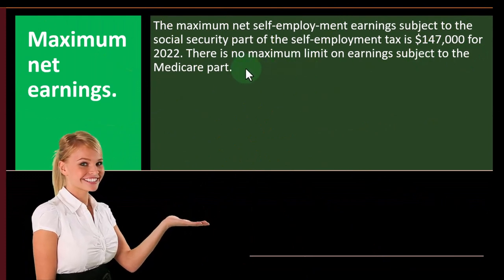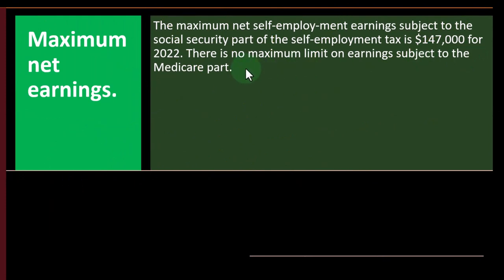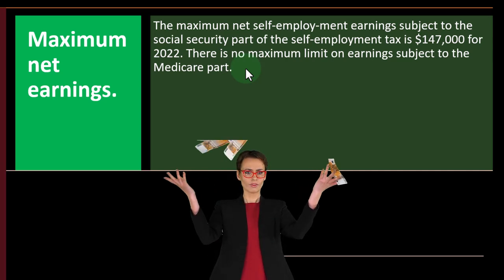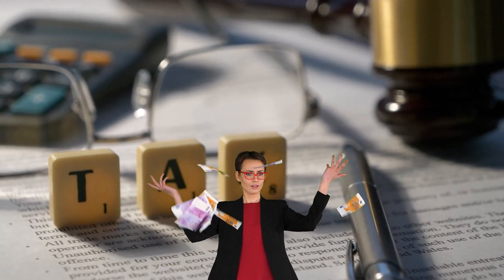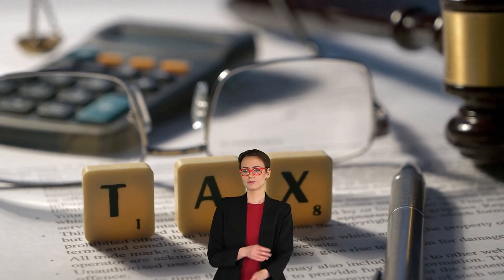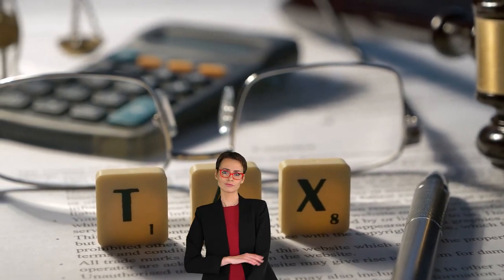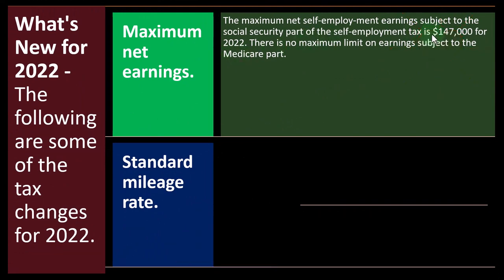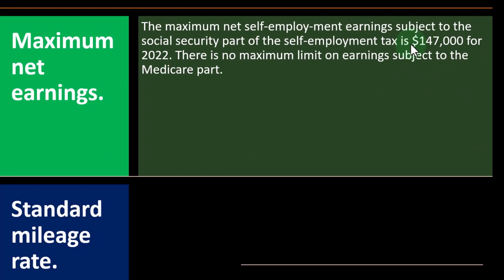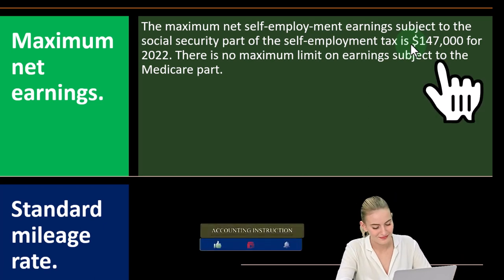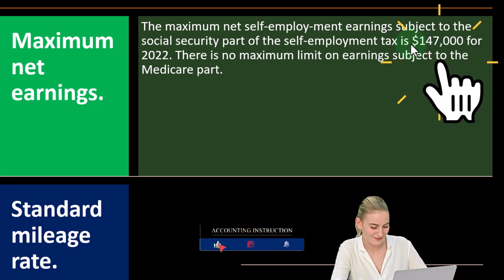Whereas when we think about the Medicare part, this is still thought more as a safety net kind of program, so there is no cap. You can also see that in the tax rates, which we'll get into when we cover self-employment taxes. The Social Security tax rate is quite high, while Medicare is a smaller rate. That cap is often contentious — people often debate where that cap should be. But typically it will be going up each year to be in compliance, at least with inflation.